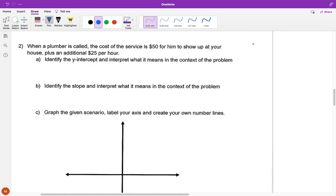All right, so for this one, same thing, we have y equals mx plus b. We know our b equals our y-intercept and we know our m equals our slope. So that's what we have to identify first before we can go ahead and graph. Well, it says the cost of service is $50 for him just to show up. So that's our initial value. That is our y-intercept. So no matter what, this plumber is charging us $50.